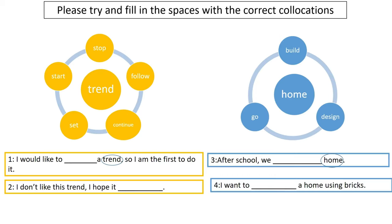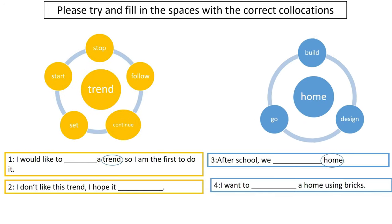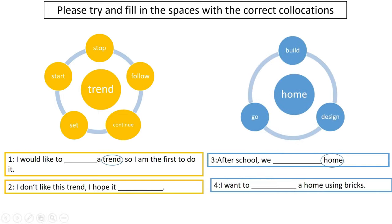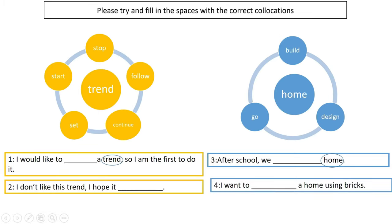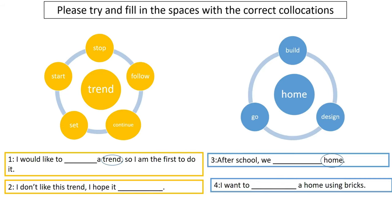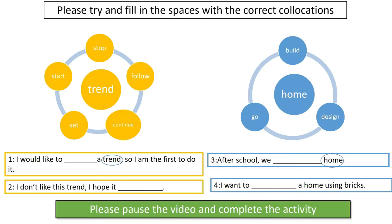So let's have some more practice. We have 'trend', which is a noun, and we also have 'home', with the correct verbs that will go with each noun in collocation. Please try and fill the spaces with the correct collocations — we've studied these before, so this is a revision. Please pause the video and complete the activity.